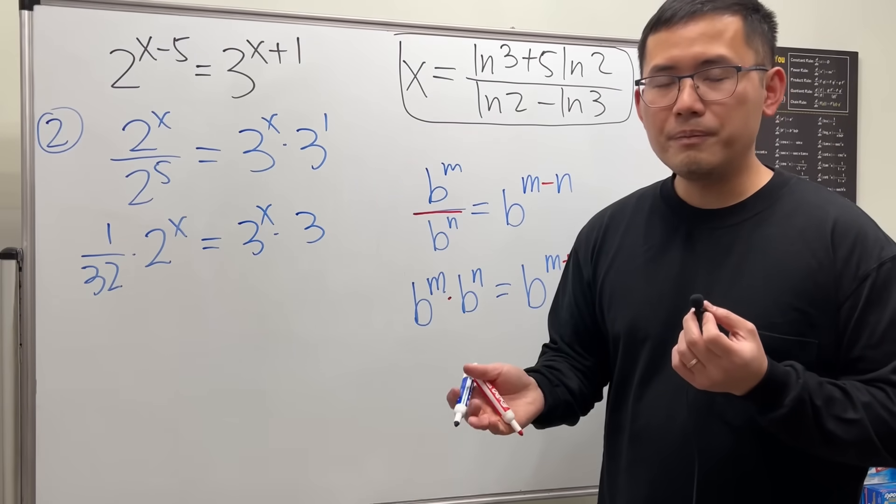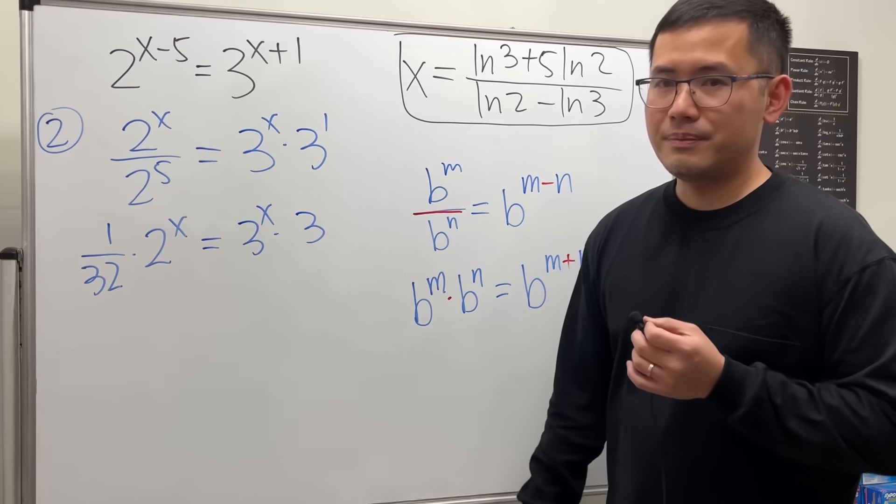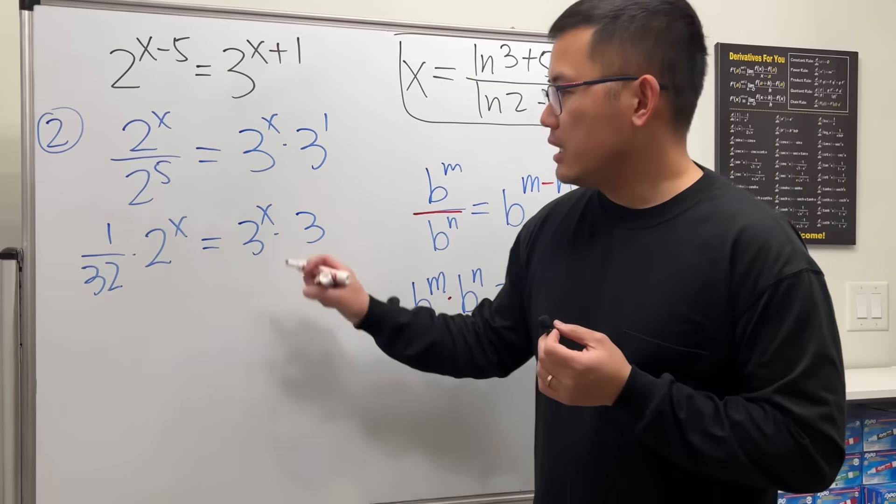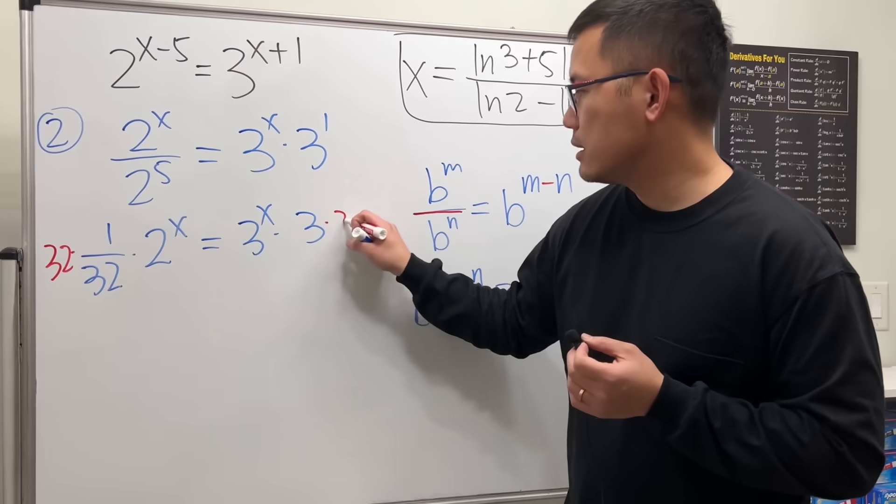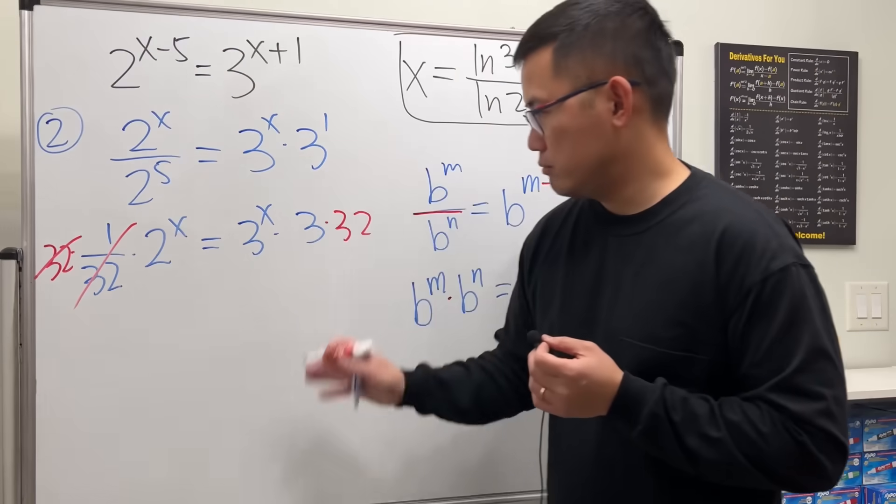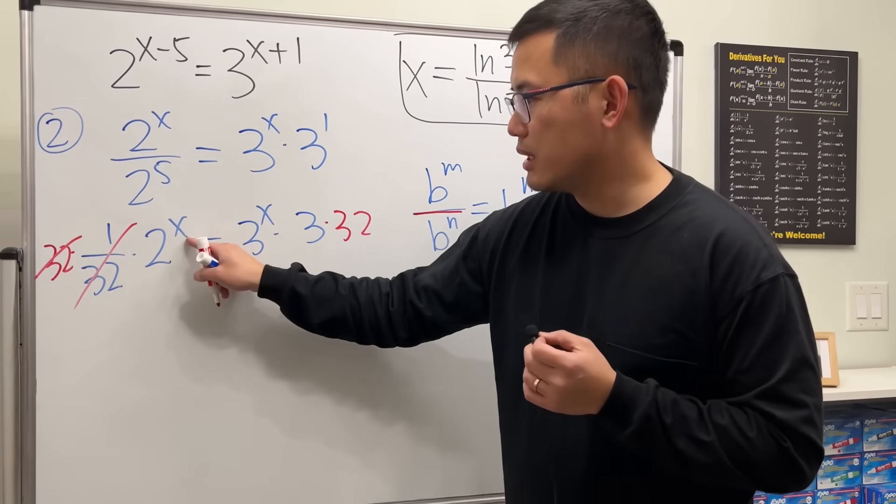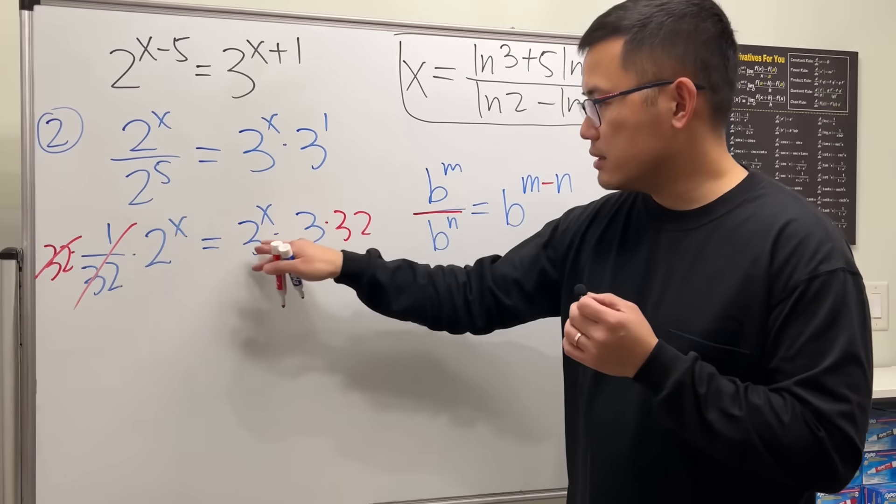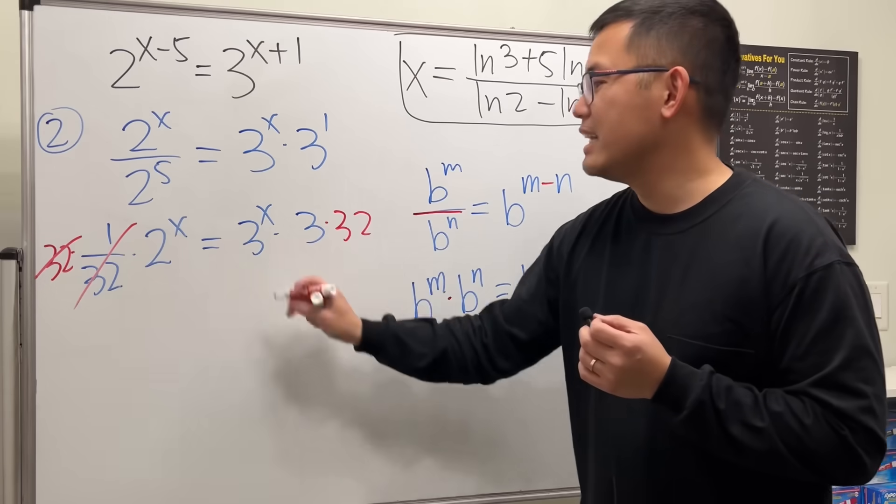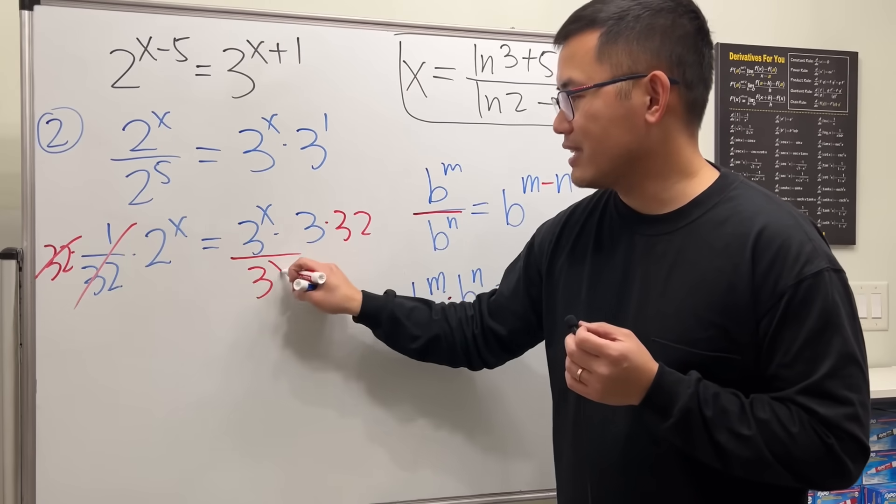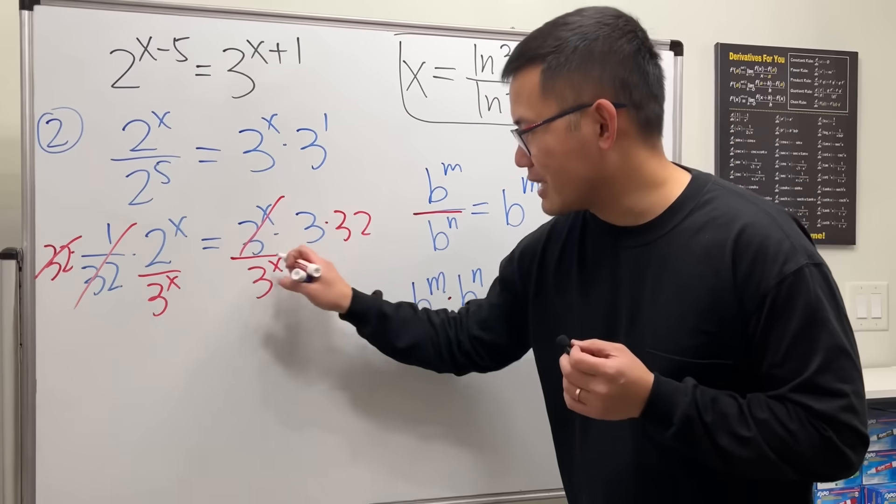And just appropriately earlier, we want to collect all the terms with x on one side and then the number on the other. To achieve that, in this case, let's multiply 32 on both sides so that this and that can cancel. And then here we have 3 to the x and this is 2 to the x. In this case, this is multiplication. So we have to divide. Divide this by 3 to the x. Likewise, divide this by 3 to the x. So that this and that cancel.